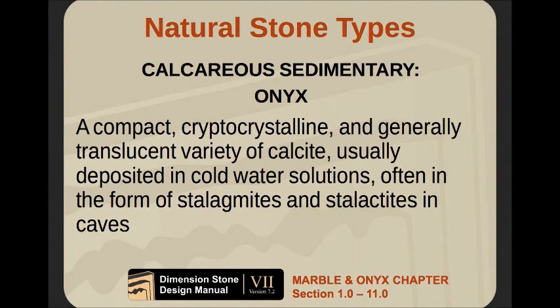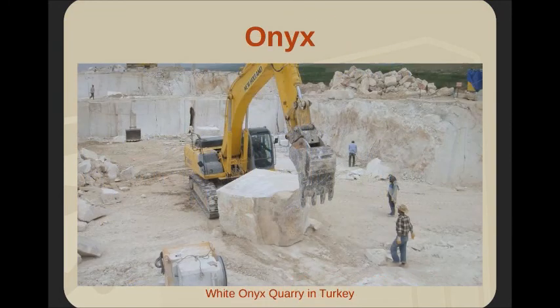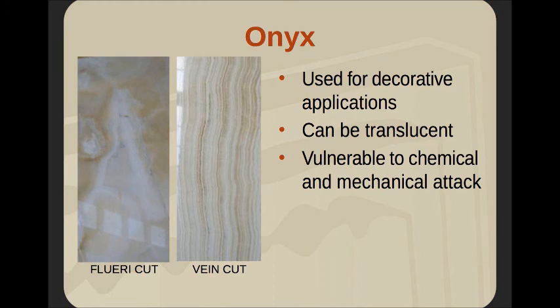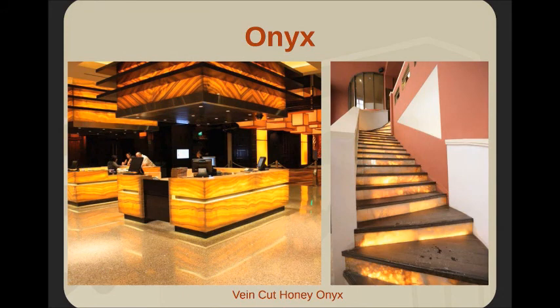Calcareous sedimentary onyx: this is a compact, cryptocrystalline, generally translucent variety of calcite, usually deposited in cold water solutions — stalactites, stalagmites formed in caves. It's more of an aesthetic material than anything else. Here's an onyx quarry in Turkey. Onyx is exceptionally vulnerable to chemical and mechanical attack, so we must be careful where we use it, and it's fairly expensive. Often we see it in backlit environments — the back wall of a nice lobby, or behind a clock. It has significant aesthetic value in those applications, but requires careful placement.